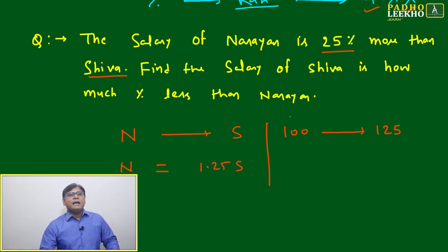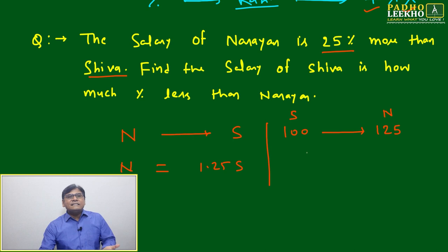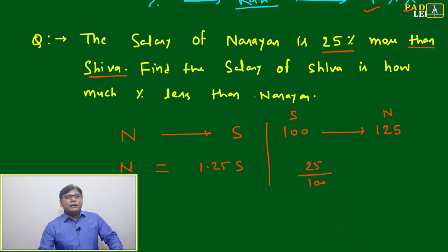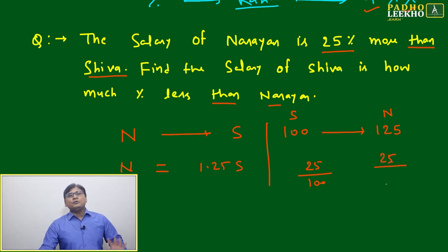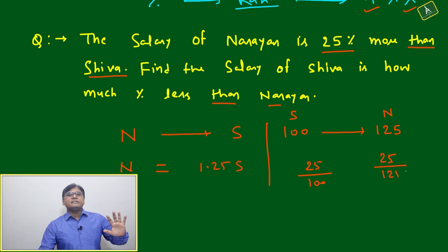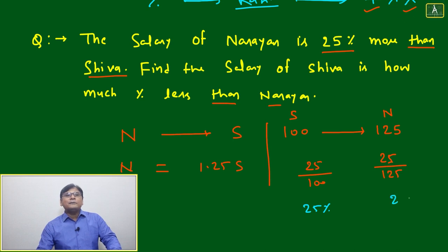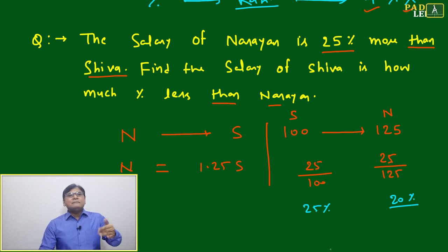If Shiva = 100, then Narayan = 125 (25% more). Now the next question asks: how much less than Narayan? So the base changes. The absolute change remains 25, but now it's 25 out of 125 instead of 25 out of 100. That gives 20%. So Shiva's salary is 20% less than Narayan's.